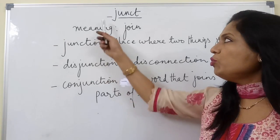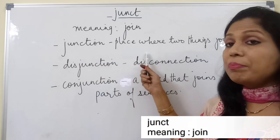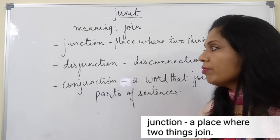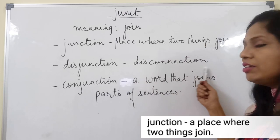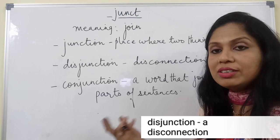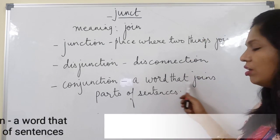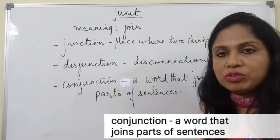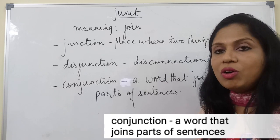The root word 'junct' means join. Junction is a place where two things join. Disjunction is disconnection — something which is not joined. Conjunction is a word that joins parts of sentences; it could join two words, two or more words, phrases, or clauses.